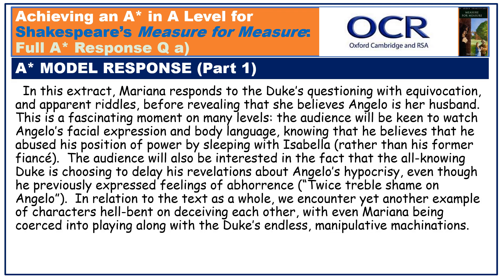Here's my A-Star model response. In this extract, Mariana responds to the Duke's questioning with equivocation and apparent riddles, before revealing that she believes Angelo is her husband. This is a fascinating moment on many levels. The audience will be keen to watch Angelo's facial expression and body language, knowing that he believes he abused his position of power by sleeping with Isabella, rather than his former fiancée. The audience will also be interested in the fact that the all-knowing Duke is choosing to delay his revelations about Angelo's hypocrisy, even though he previously expressed feelings of abhorrence — 'twice treble shame on Angelo.' In relation to the text as a whole, we encounter yet another example of characters hell-bent on deceiving each other, with even Mariana being coerced into playing along with the Duke's endless manipulative machinations.